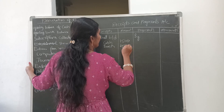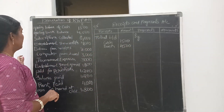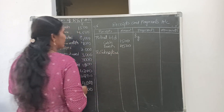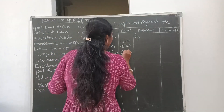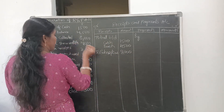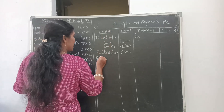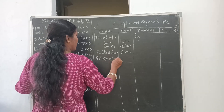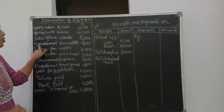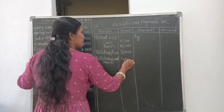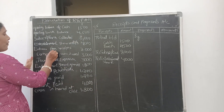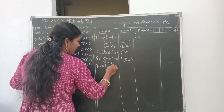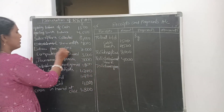Coming to subscriptions collected — 'collected' means received by the organization. The amount of subscription is 8000, so it goes on the receipts side. Next, entertainment show receipts — this is also a receipt, amount is 4000. Next, entrance fee receipt — this is also a receipt. We write entrance fees on the debit side; the amount is 2000.